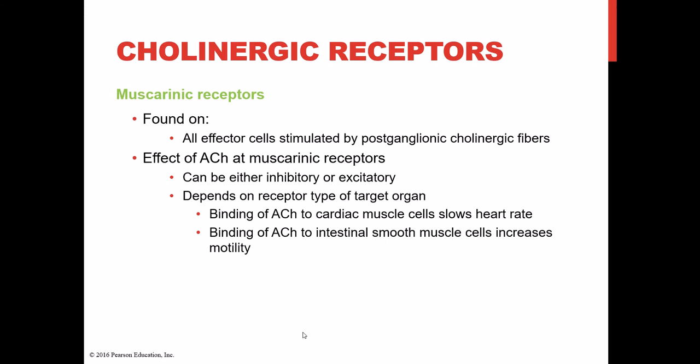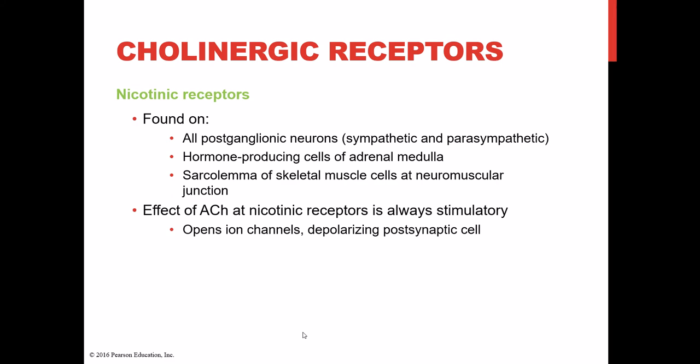Muscarinic receptors are found on pretty much all effector cells stimulated by post-ganglionic cholinergic fibers. Acetylcholine at muscarinic receptors can be inhibitory or excitatory depending on the target organ. For instance, acetylcholine binding to a muscarinic receptor on cardiac muscle slows the heart rate down, but when acetylcholine binds to a muscarinic receptor on smooth muscle in the small intestine, it increases intestinal activity. So muscarinic receptors tend to have either excitatory or inhibitory effects, whereas nicotinic receptors are essentially always excitatory.